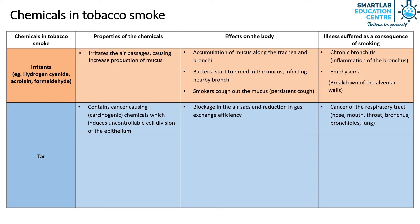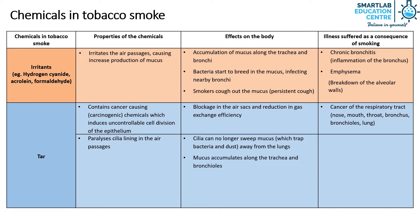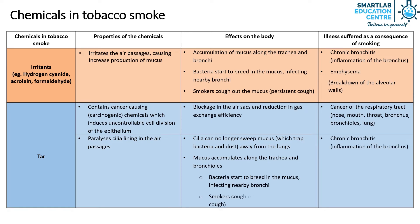Tar also paralyzes the cilia lining in the air passages. This causes the cilia to no longer be able to sweep mucus away from the lungs, thereby trapping bacteria and dust. It also causes mucus to accumulate along the trachea and bronchioles. When bacteria start to breed in the mucus, it can infect the nearby bronchi, leading to chronic bronchitis. When smokers cough out the mucus, the persistent coughing can lead to emphysema.